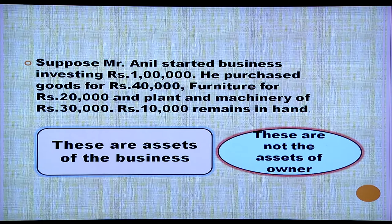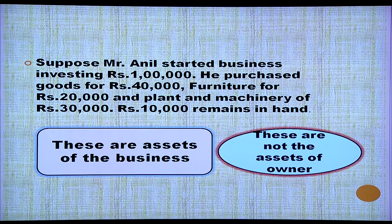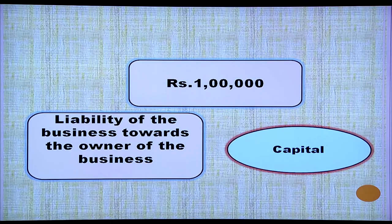Suppose Mr. Anil started a business investing one lakh. He purchases goods for rupees forty thousand, purchased furniture for twenty thousand, plant and machinery for thirty thousand, and the remaining rupees ten thousand is as cash with him. These are the assets of the business, not the assets of the owner. That is what the business entity concept is emphasizing.